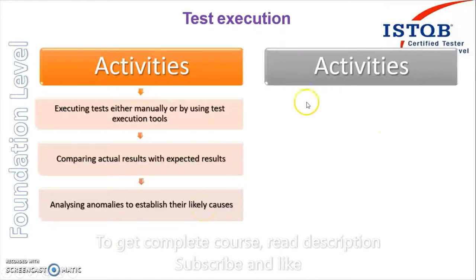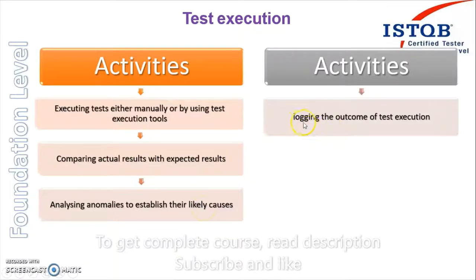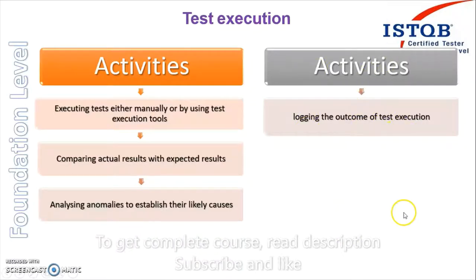Moving to the next point: logging the outcome of the test execution. We have to log the outcome of test execution. As we saw in the automation tool in our last class, there were columns showing execution times, how many test cases passed, how many failed, and how many were broken. So we have to log the outcome of test execution.